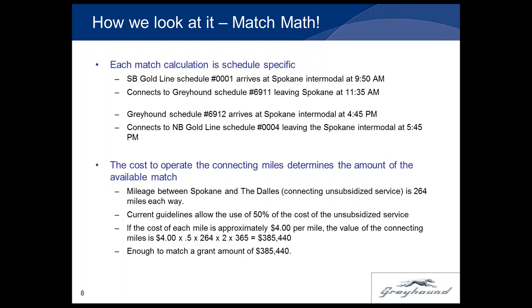The numbers are modified for easier calculation, but the cost of operating the connecting miles determines the amount of available match. The mileage between Spokane and The Dalles is approximately 264 miles each way. Current guidelines allow use of 50% of the cost of the unsubsidized service using Method 1 — Capital Cost of Contracting Guidelines. If the cost per mile is approximately $4, the value of the connecting miles is $4 times 50%, times 264 miles, times 2 for a round trip, times 365 days a year — giving enough match for a grant amount of approximately $385,000.